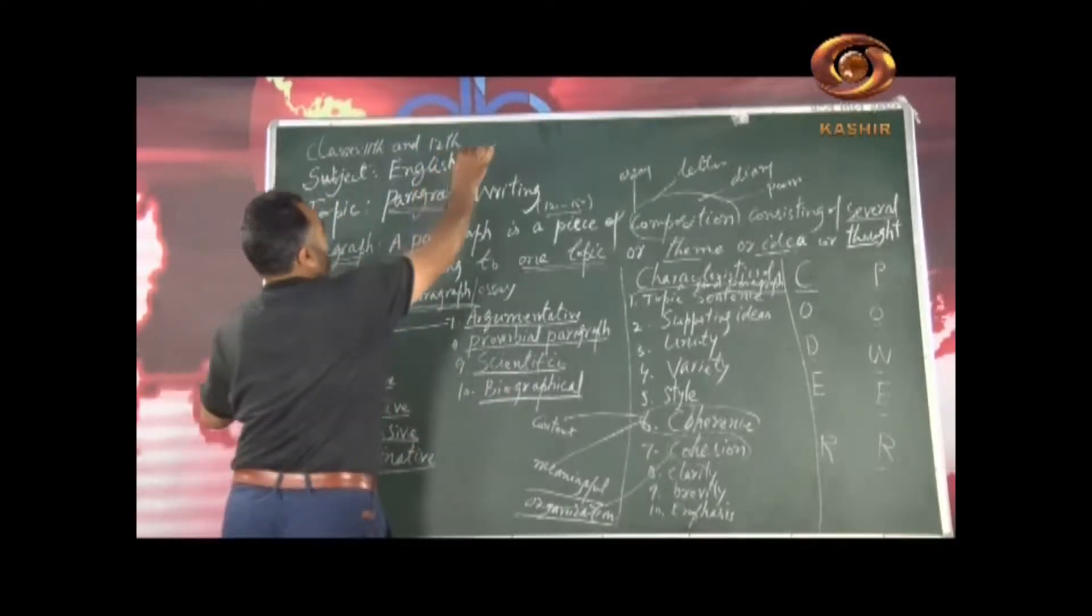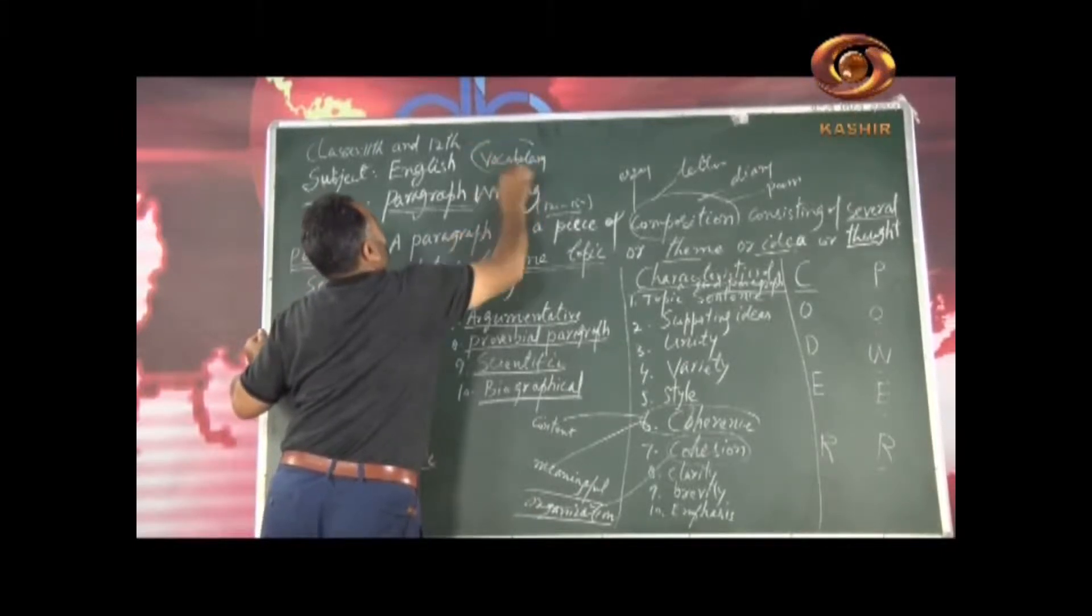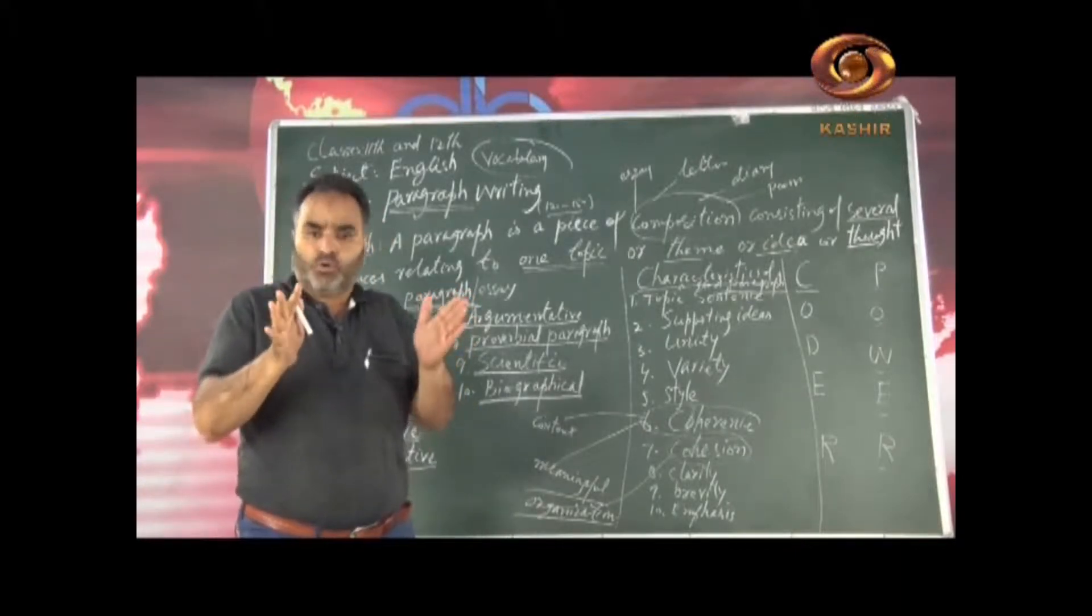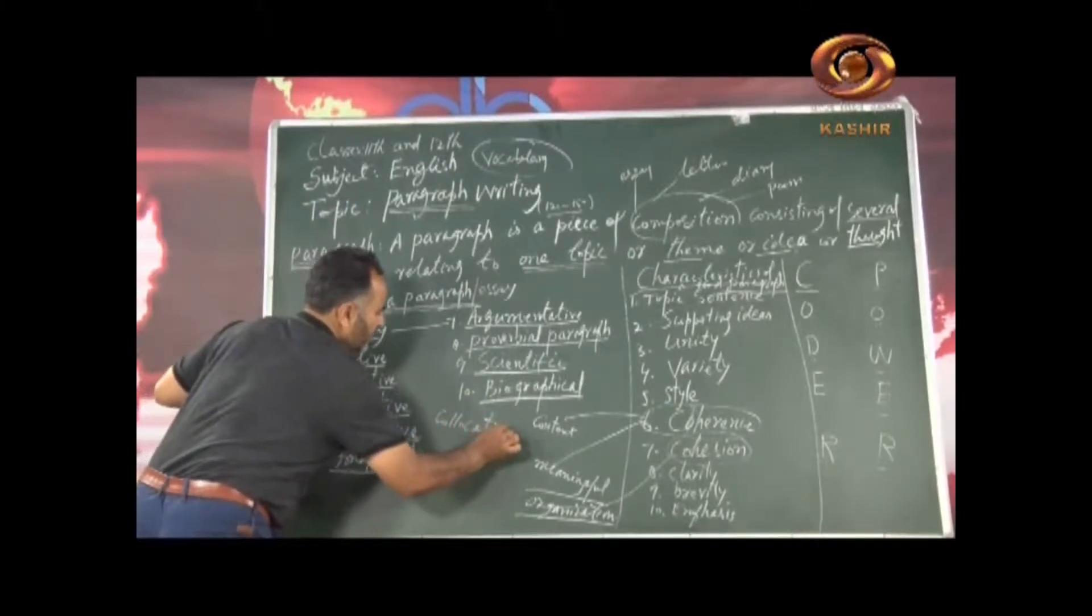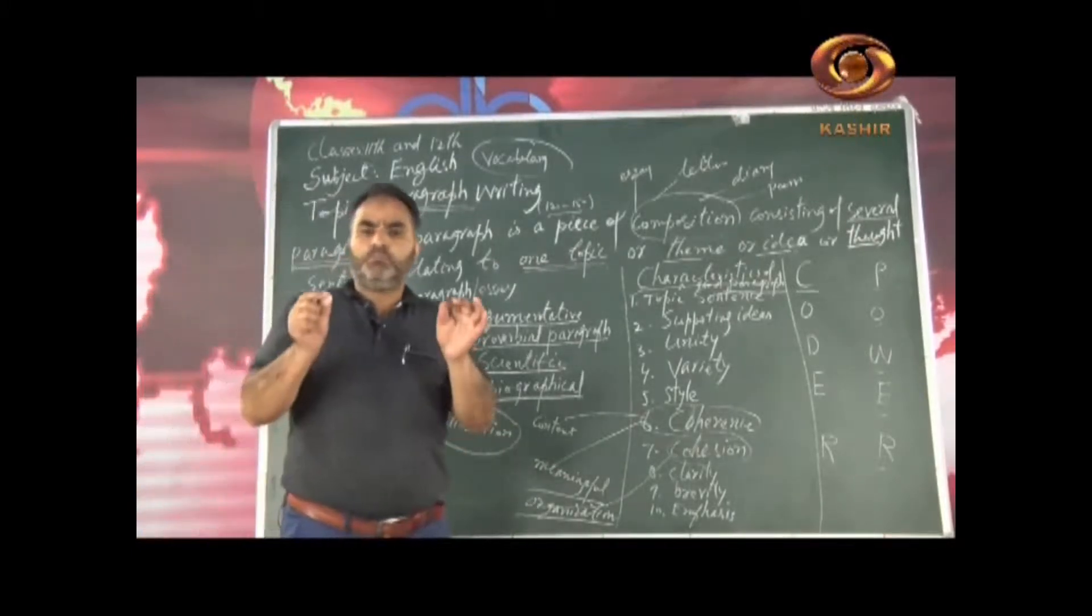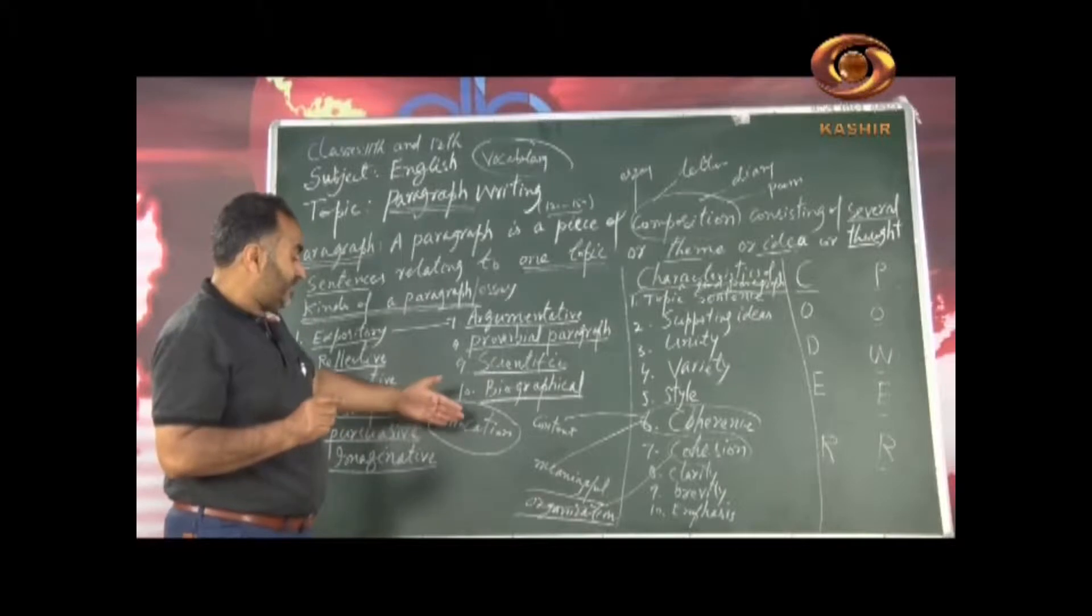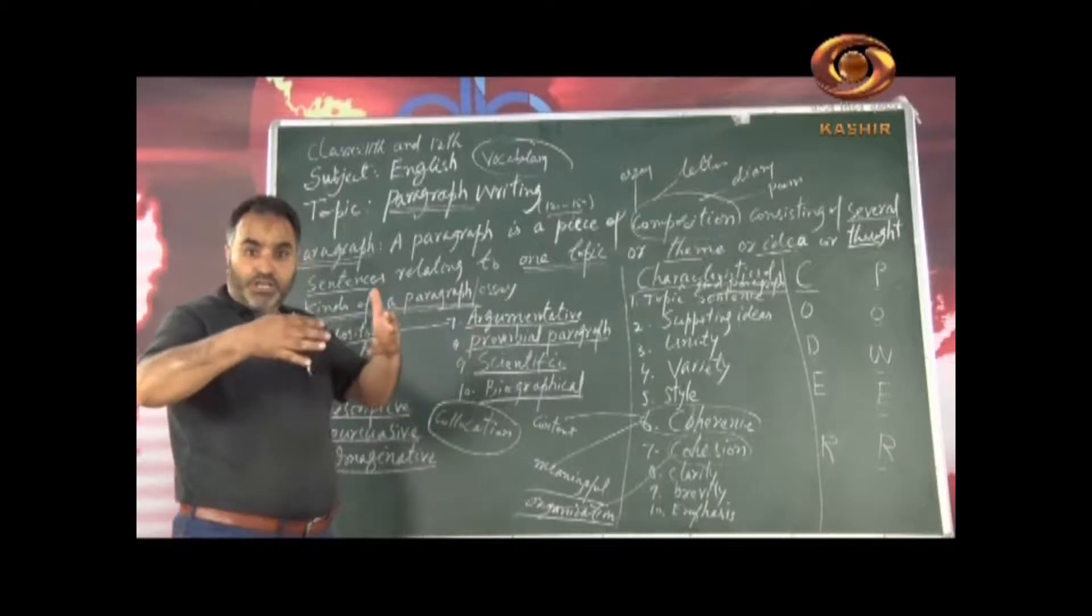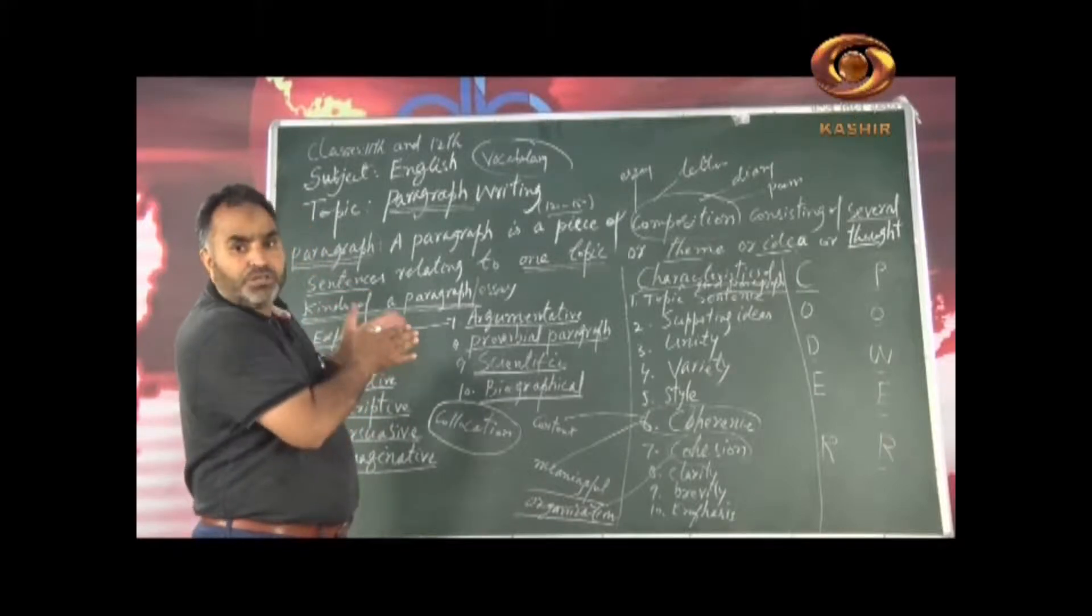For example, you have here word power and one thing there is that is we call that collocation. There is a word called collocation C-O-L-L-O-C-A-T-I-O-N. I will give an example. We say a beautiful girl, but we say a handsome boy. We do not say handsome girl and we do not say beautiful boy. So we call that collocation. Which word is collocate with what? So that is also very important because tomorrow actually somebody else is going to read your writing.